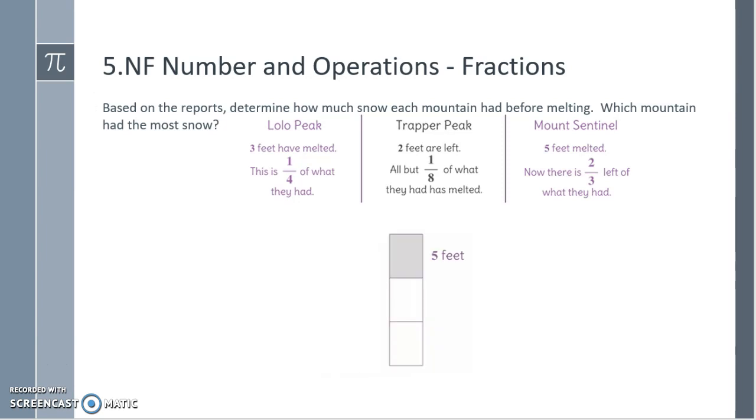Mount Sentinel had 5 feet melted. Now there is 2 thirds left of what they had. That means that a third divided by what they had is equal to 5. This is slightly different than the other two based on the wording. Which is the same as 5 times 3, which is 15, because there are 2 thirds left that we need to find. And if each third is equivalent to 5 feet, we would have 15 altogether. Taking a look at where the snow first started, we have 12 feet for Lolo Peak, 16 feet for Trapper Peak, and 15 for Mount Sentinel. Trapper Peak had the most snow.